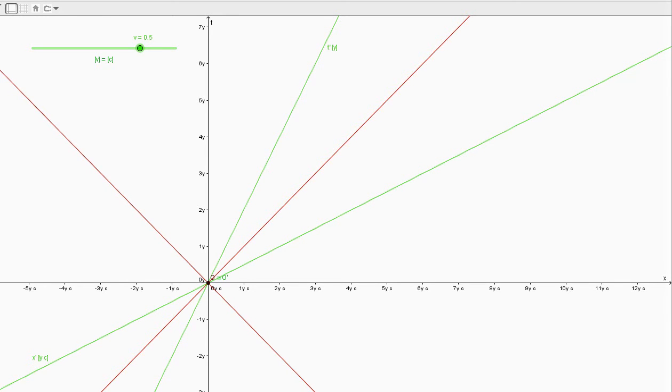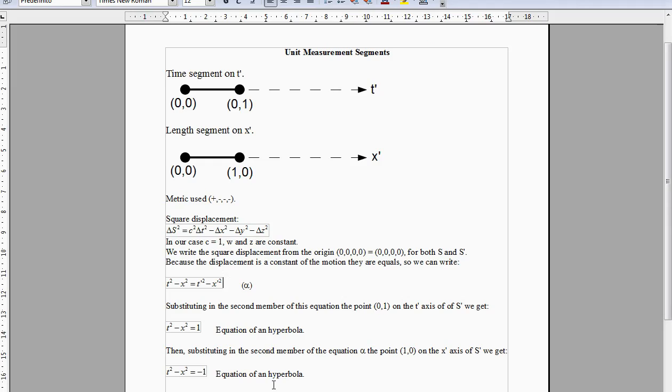The aim is to determine the length of the unit segments of the t' and x' axis on this graph. This is the unit time segment in S'. Its origin coincides with the origin of S'. To determine where the other extreme stays, we use the square displacement, whose value is equal in S and S' because the displacement is a constant of the motion.